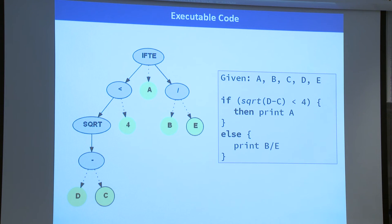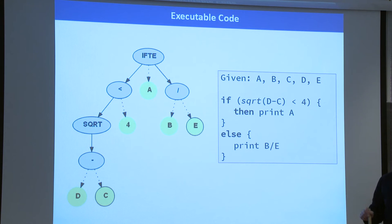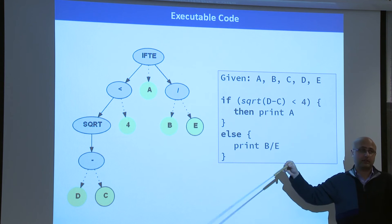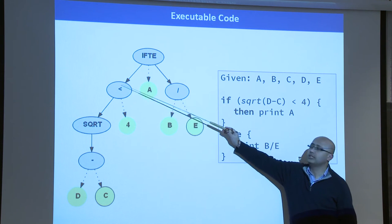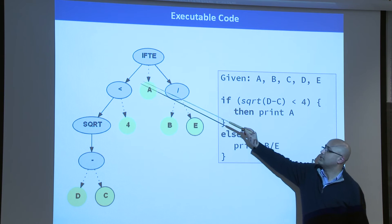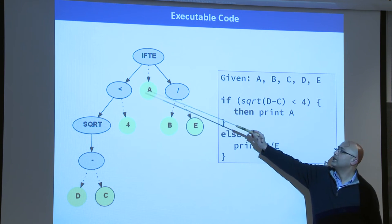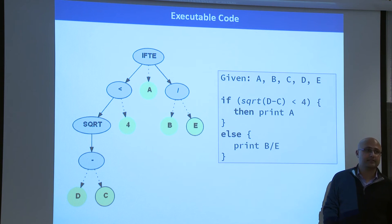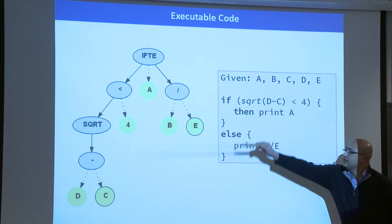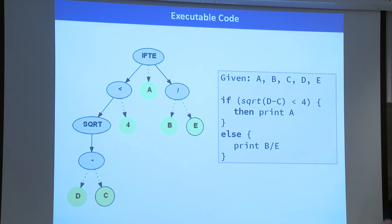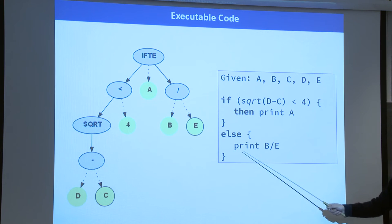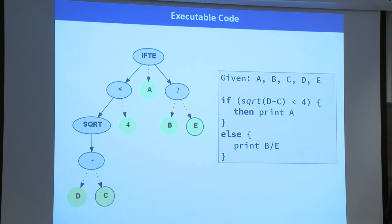As mentioned, you can also represent if-then-else routes, and you can have for-loops, while-loops, and so on. For the if-then-else, you have three operands: the if-condition, the then-condition if satisfied, and the else branch if not. This tree here can be written as: if the square root of (d minus c) is less than 4, print a, else print b divided by e.